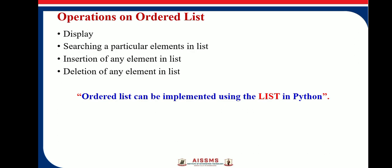Here are a few operations on an ordered list. The first one is display, another is searching an element, the third is insertion of any element in a list, and the last one is deletion of any element from a list. An ordered list can be implemented using the list in Python, so we will use a Python list as an ordered list.